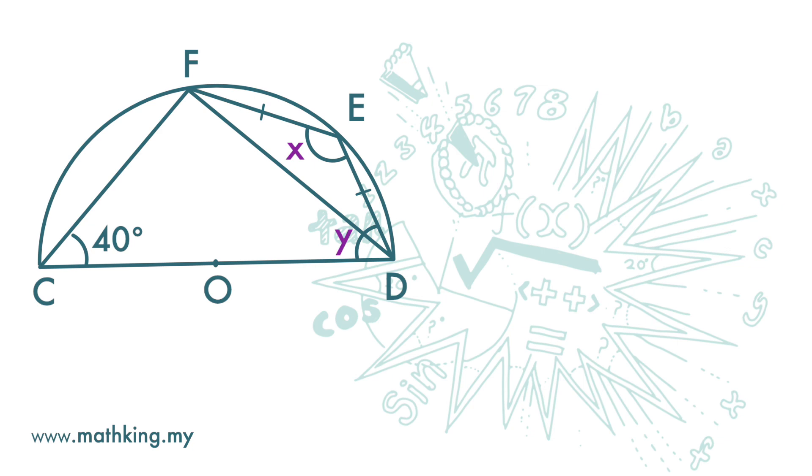Then we can find out X easily. Angle X and 40 degrees here are interior opposite angles. So X plus 40 equals 180 degrees. So X is 140 degrees.